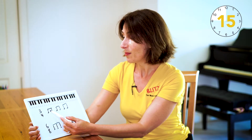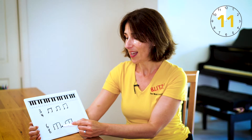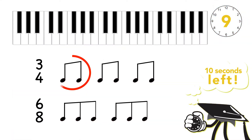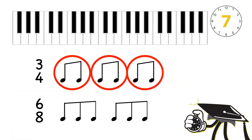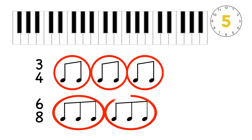3/4 is going to be 1, 2, 3 and 6/8 is going to be 1 and a, 2 and a. So we've got three crotchet beats in a bar for 3/4 and we've got two dotted crotchet beats in a bar for 6/8 and that's the difference. Thanks for watching 60 Second Blitz.